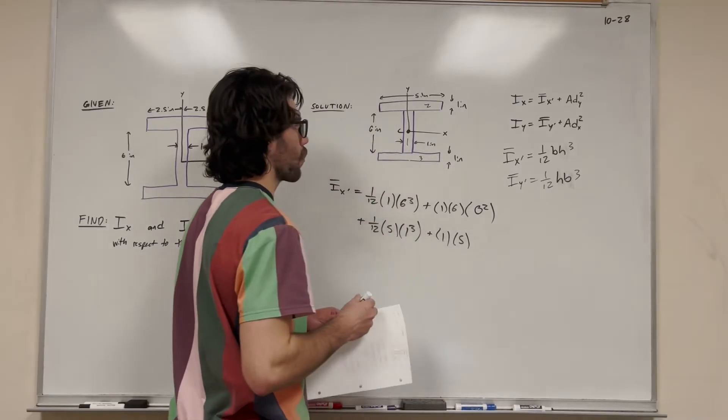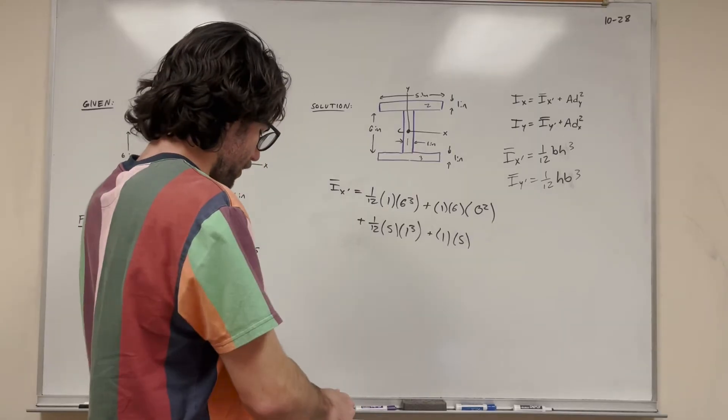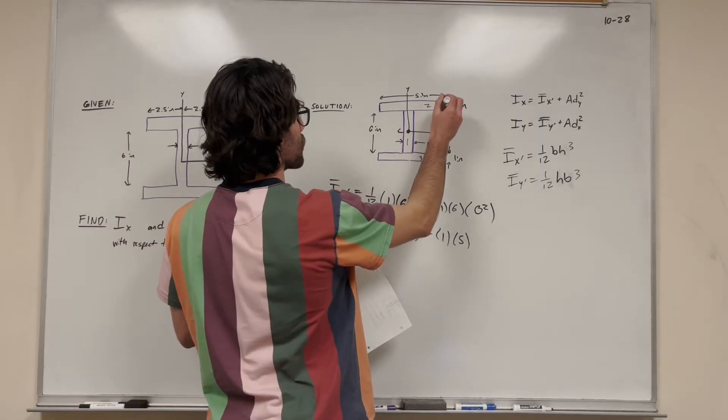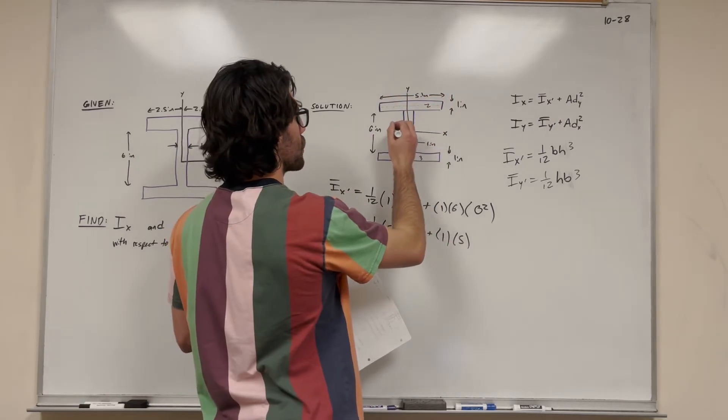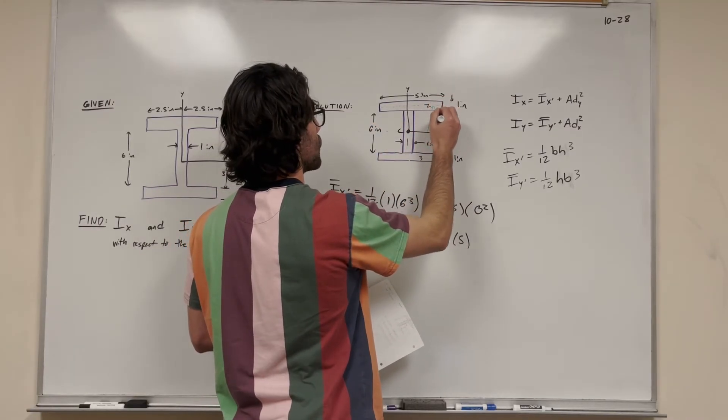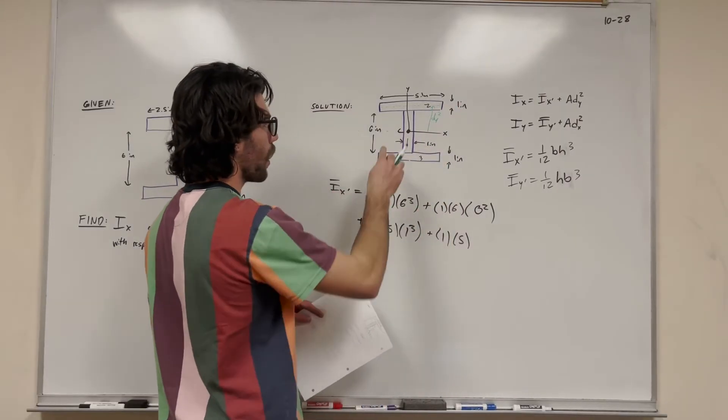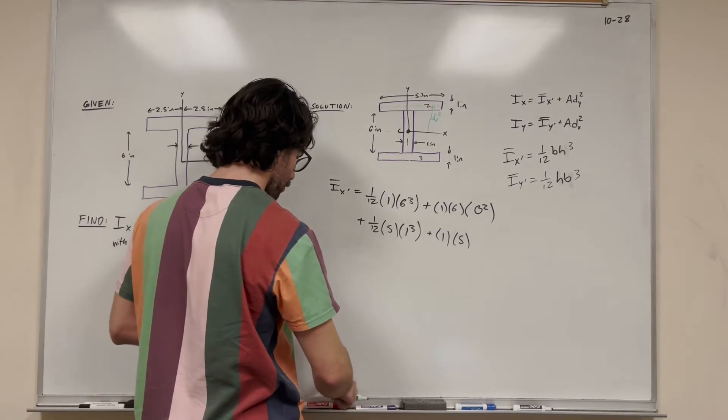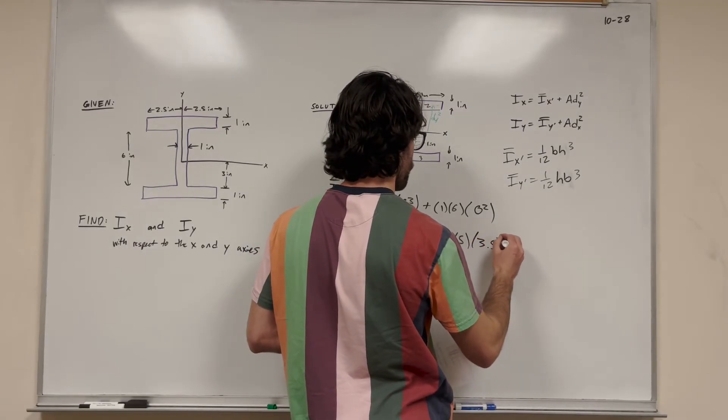When we look for distance y, we're going to the center of mass. The center of mass of this rectangle lies along the center. We know the center of mass of the whole shape lies across here, so we're looking for this distance. That distance y is going to be 3 inches - because the middle rectangle is 6 inches tall - plus half an inch. So we're going to add 3.5 inches squared.